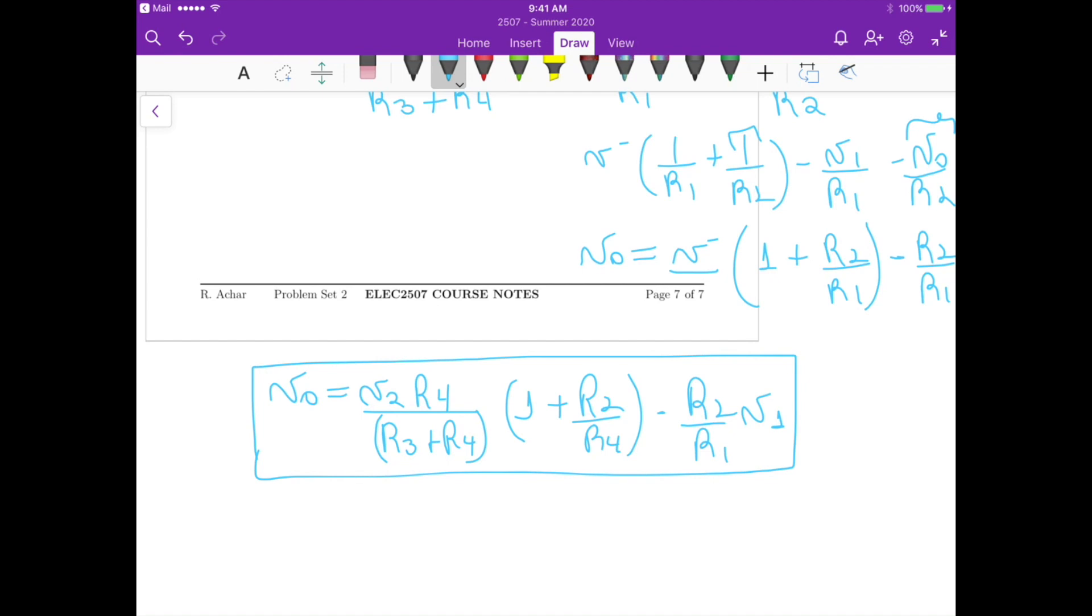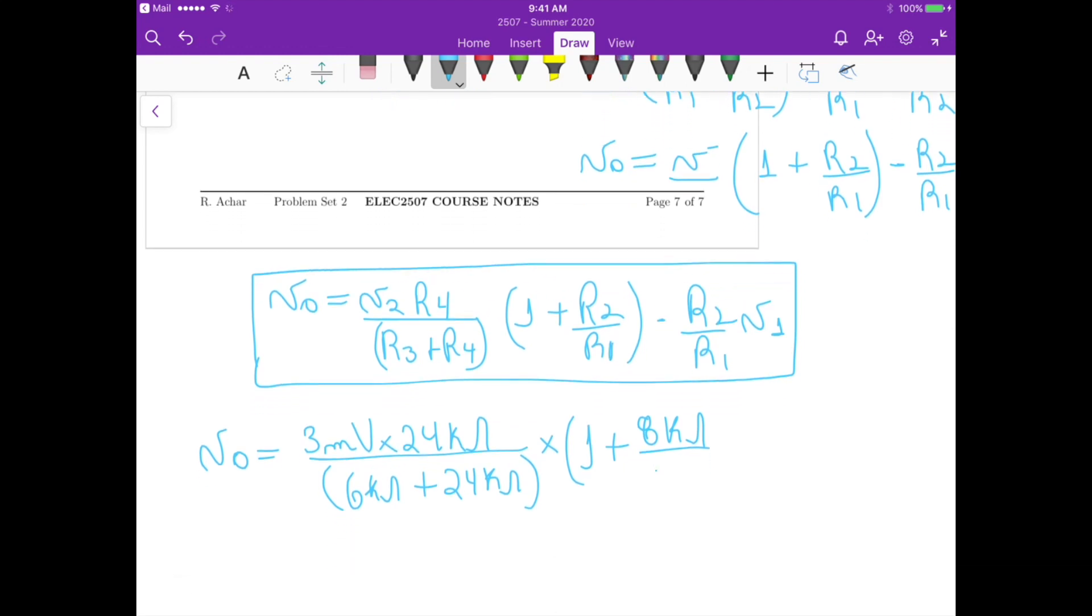Now if we just plug in the values that were given for R1, R2, R3, and R4, and V1 and V2, we get that V out is equals to V2 which is 3 millivolts times 24k ohms for R4 divided by R3 which is 6k ohm plus 24k ohms, times 1 plus R2 which is 8k ohm, R1 which is 2k ohm, minus R2 which is 8k ohm divided by 2k ohm, times V1 which is 2 millivolts. So if we solve this, we get V out equals to 4 millivolts, so that's what we have for the first part.